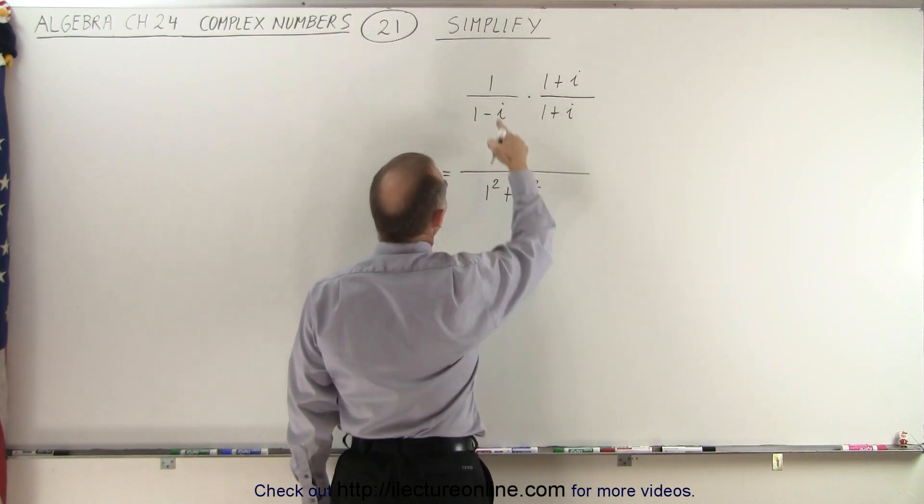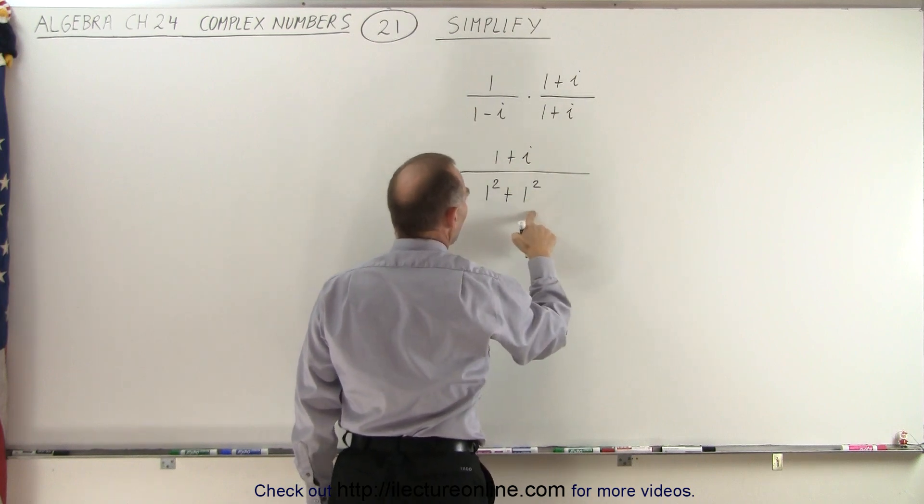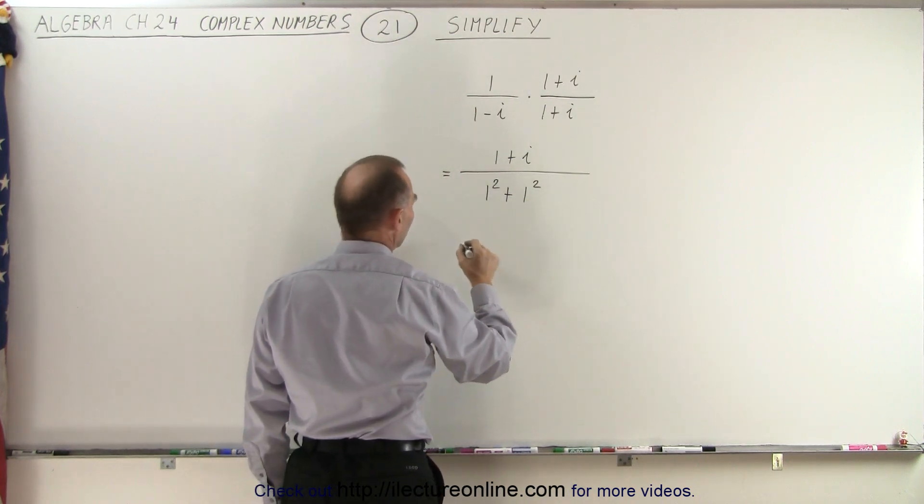And in the numerator we have 1 times 1 plus i, which simply becomes 1 plus i. Now in the denominator, that is 1 plus 1, which is 2.